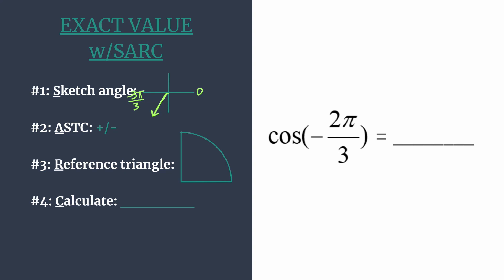So the A tells us to think ASTC or an easy phrase to help you remember that acronym is all students take classes. So let's label our quadrants, starting in the first quadrant ASTC. So we're just working our way around here. And this tells us which of the trig functions are going to be positive in each of these quadrants. So in quadrant 1, they're all positive. In quadrant 2, the S tells us only sine and its reciprocal cosecant are positive. The other 4 will be negative.